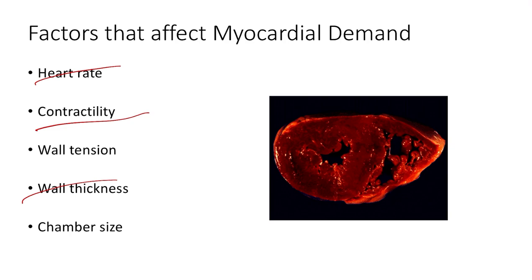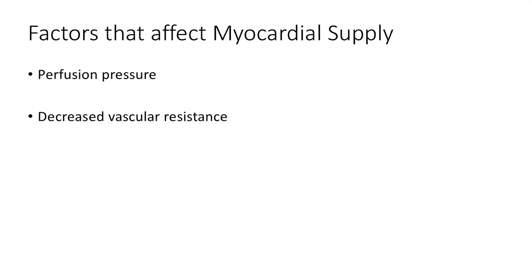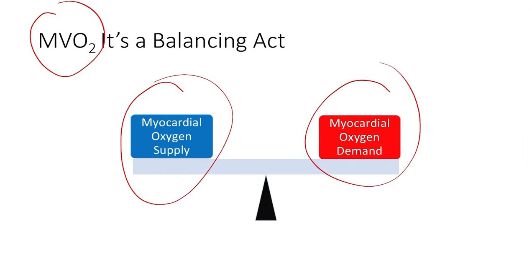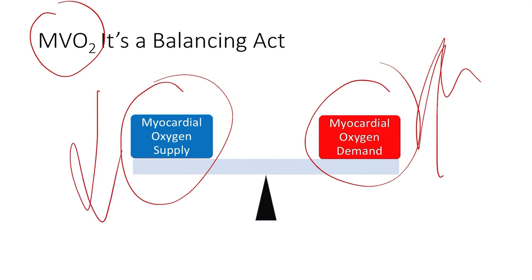Factors that increase myocardial demand include heart rate, contractility, wall tension, wall thickness, and chamber size — a thicker wall and larger chamber make it harder for the heart to work. Remember, the heart gets its perfusion from itself through pumping, not from blood remaining in the chambers. So myocardial oxygen demand — MVO2 — is a balance. Demand increases when beating too fast or when afterload is very high, and supply can decrease with coronary artery obstruction, which also impairs our ability to perfuse.